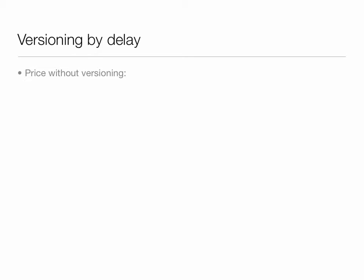If you didn't have versioning, what price would you charge? The two natural candidates given this market are either to price at $30 to the high types. You'd sell only to those high types — half the market only — but you would receive a margin of $30 minus $5, that is $25 for those. So your profits would be $12.50.